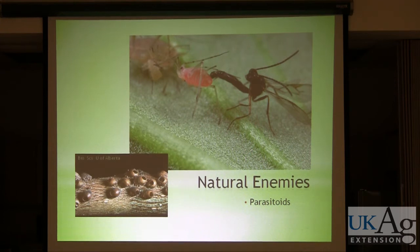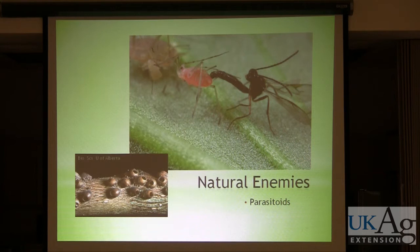Here we have an adult female wasp that's laying an egg into this aphid. The egg of that wasp will hatch and the wasp larvae will consume the aphid from within, then it completes its development within the aphid. The new wasp, after it's finished its development, chews a hole out of that dead aphid. That's what you're seeing here — all of these are aphids that have been parasitized by these wasps.